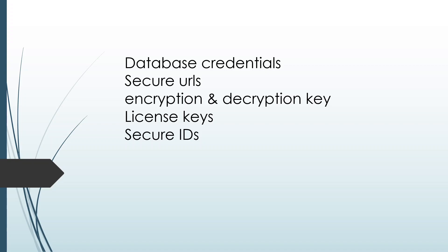In such scenarios, we generally write them in some constant file or properties files — for example, in Spring Boot applications. We refer to them from the property file into our codebase. But ideally, configuration-related data like database credentials, encryption keys should be isolated from the code. When credentials or URLs need to change, there should be no application code modification or redeployment required. If we maintain them alongside the codebase, we have to modify the code and redeploy the application.